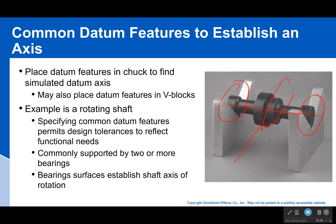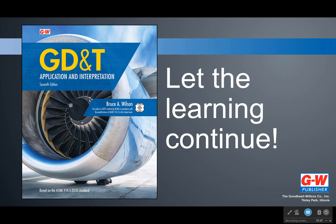They're establishing that axis, and so if that's the way it's being held in real life, we want our feature control frames and our datums to match real life, to match reality, to match function. So we're going to use that common datum feature by specifying that little dash there in the feature control frame. Common datum features are because we want our tolerancing to match how it's being constrained and used in real life. Thanks for listening. Bye-bye.